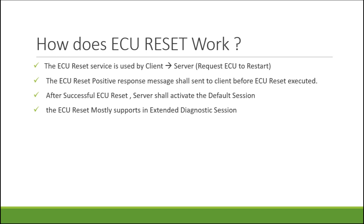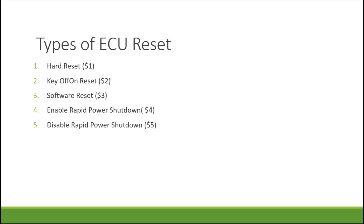Here you can see the types of ECU reset. We have: hard reset, key off/on reset, software reset, enable rapid power shutdown, and disable rapid power shutdown. The most important ones are hard reset, key off/on reset, and software reset.